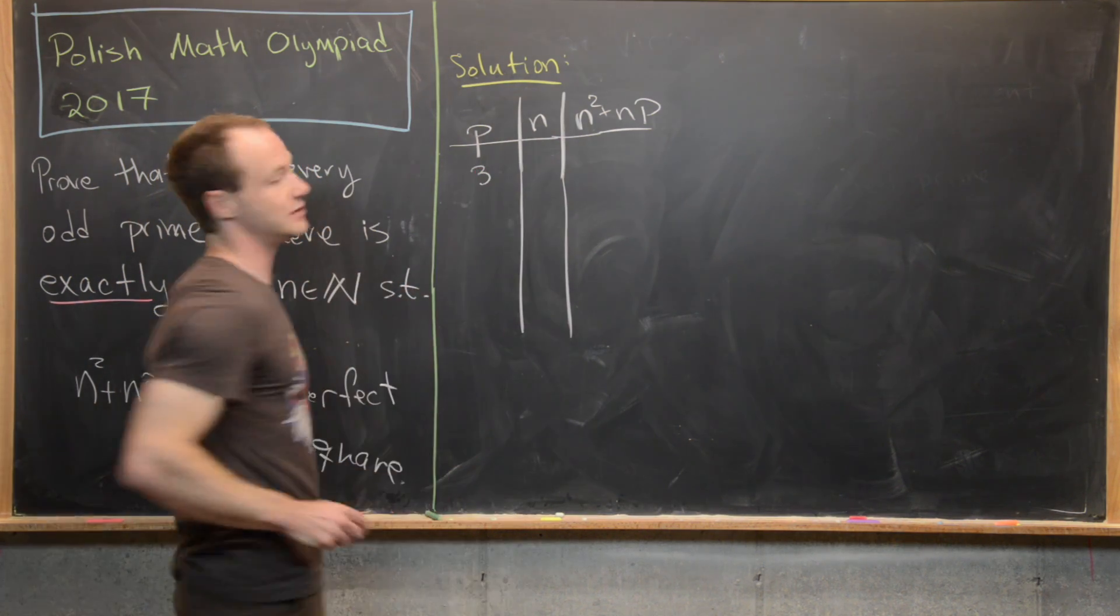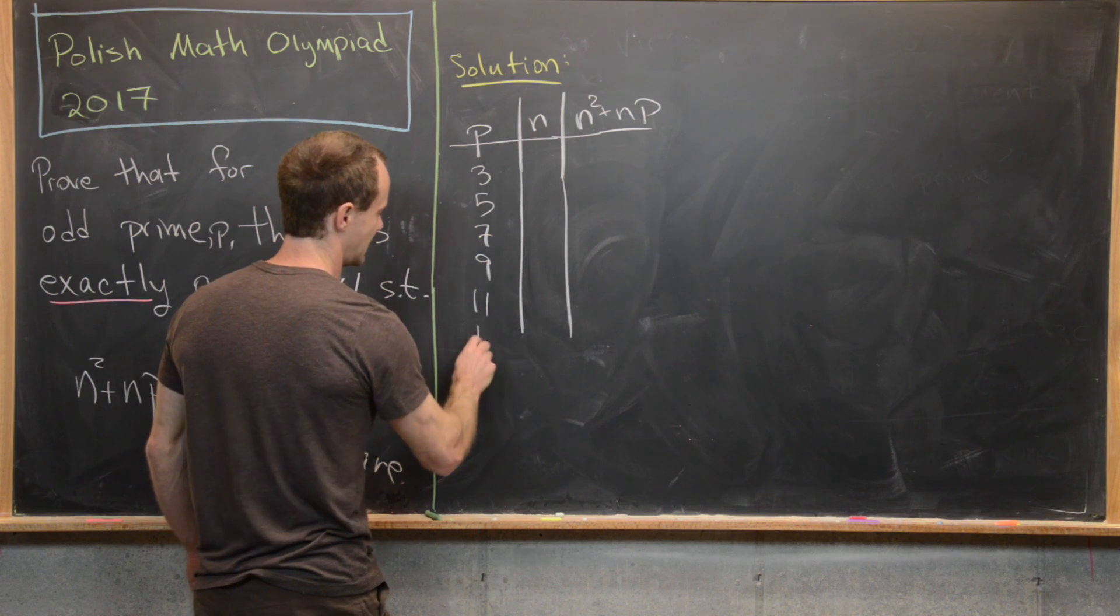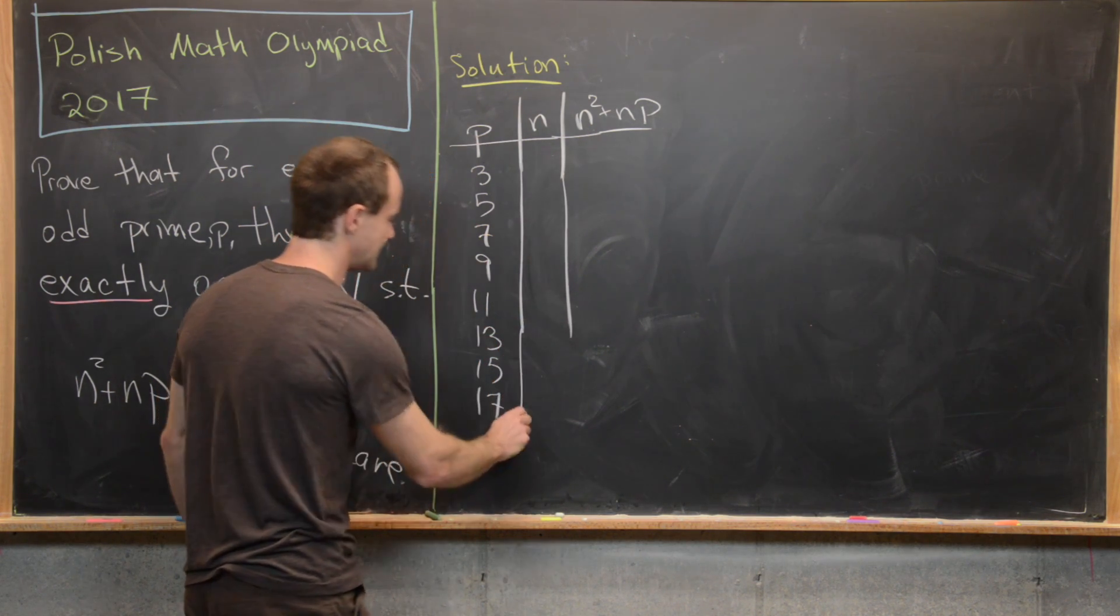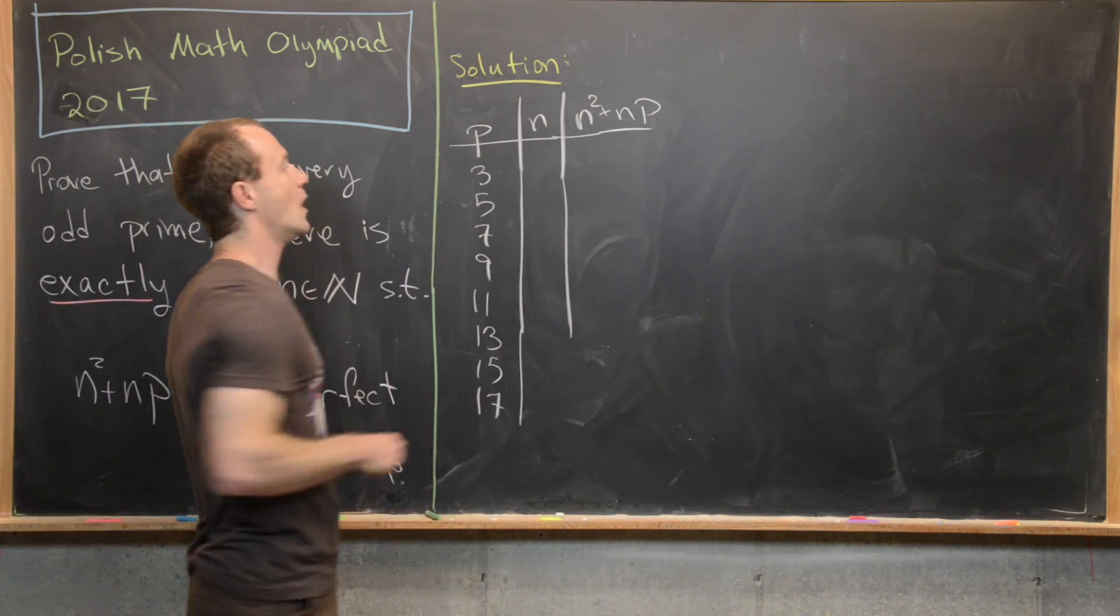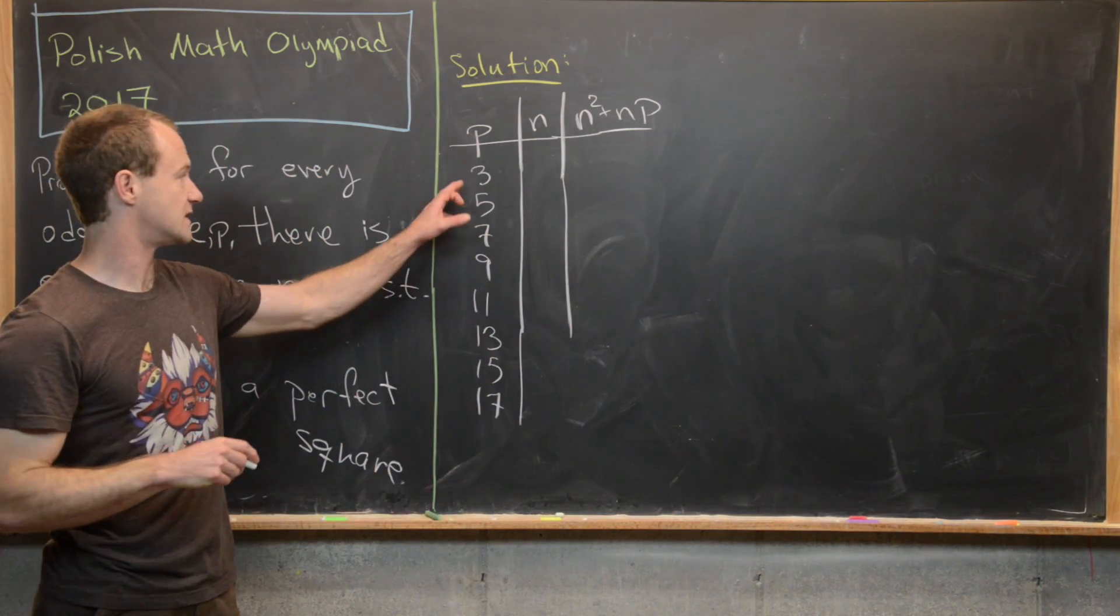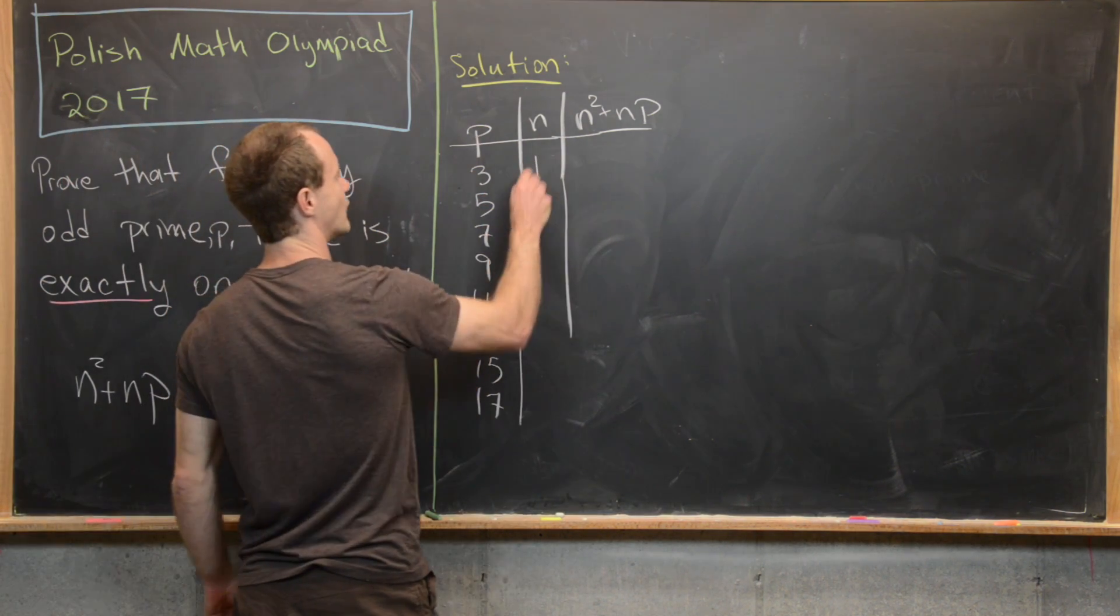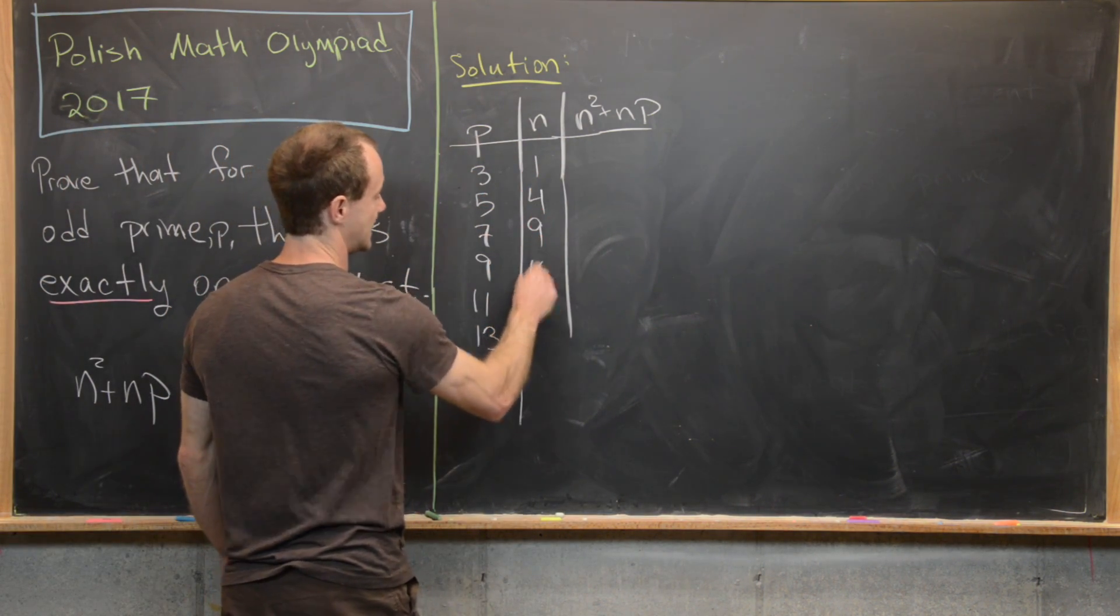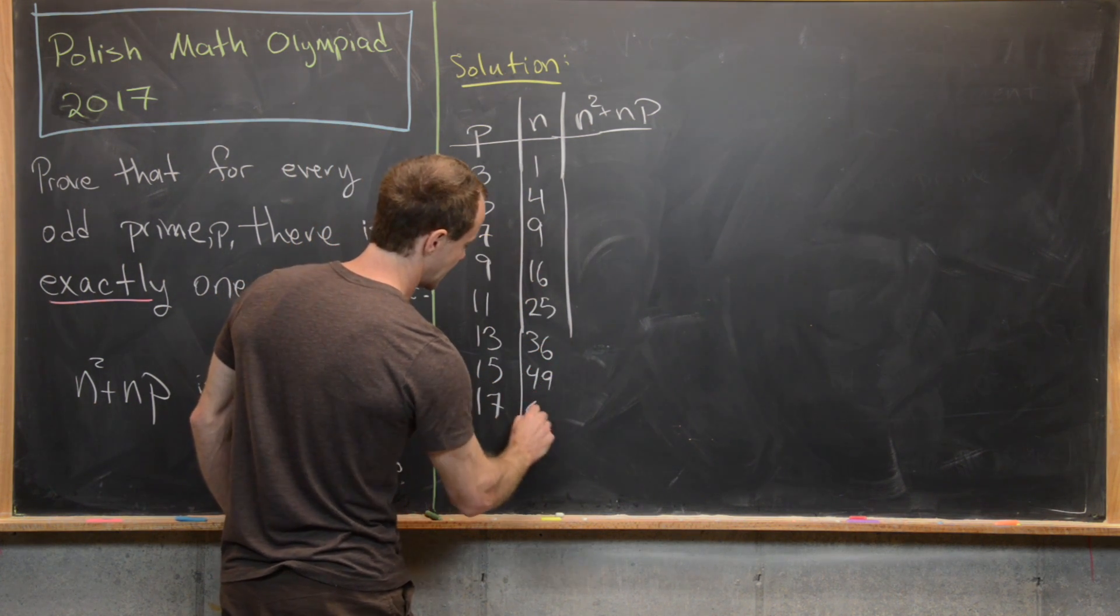So let's go ahead and do 3, 5, 7, 9, 11, 13, 15, 17 down the column of the p's—those are some odd numbers. And then what n values will correspond to these choices making this a perfect square over here? Well we'll have 1, 4, 9, 16, 25, 36, 49, and 64.